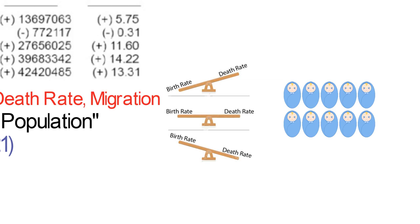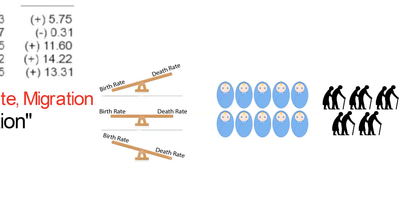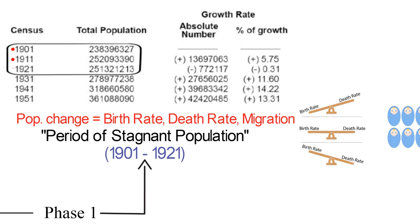Any country's population will be stagnant if the birth rate is counterbalanced by the death rate. In other words, in a given population, if there are 10 new births and 10 deaths, there will be hardly any change in the population — this is what is called stagnant population. So from 1901 to 1921, India's population was stagnant. In 1921, the population was around 25 crore 13 lakhs. That means the birth rate was high; however, the death rate was high too.